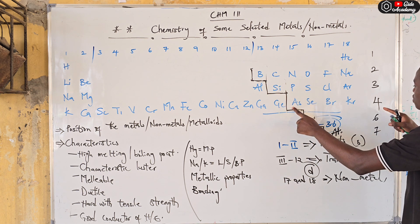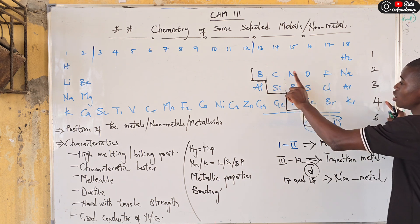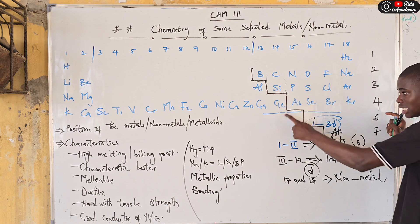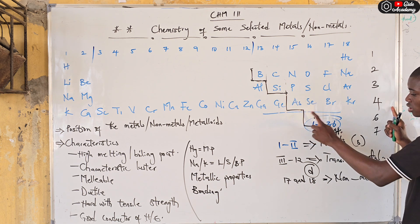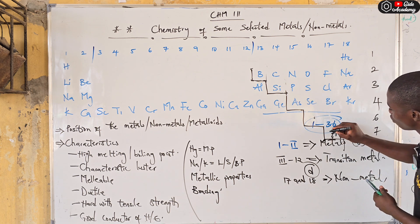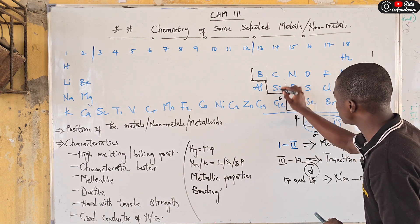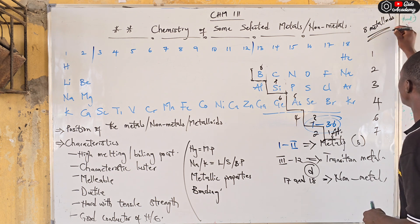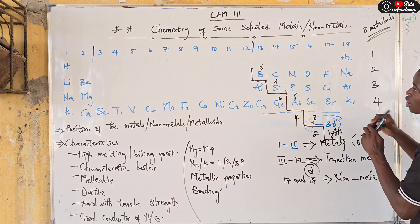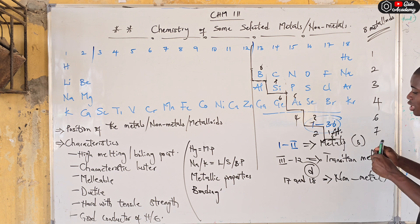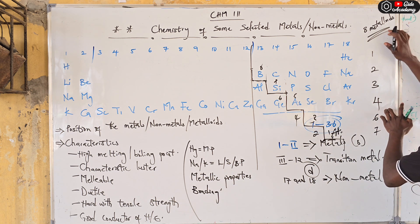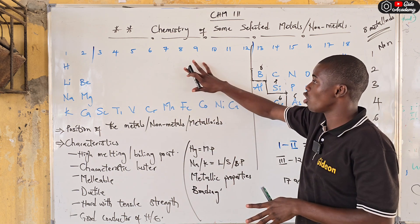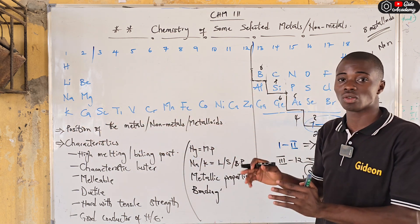To know whether an element is a non-metal or a metalloid: in period one there are no metalloids; in period two we have boron; in period three we have silicon; and in period four we work with this diagonal line. The element behind this line is a metalloid and the one in front is also a metalloid. In total we count eight metalloids in the periodic table.